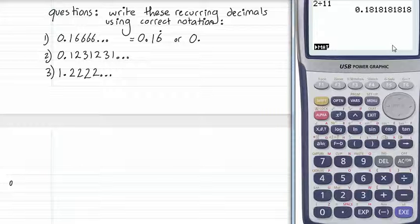If we put the dot or the bar over the one and the six, that would say it was 0.161616 repeating forever.